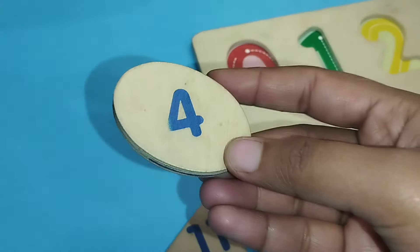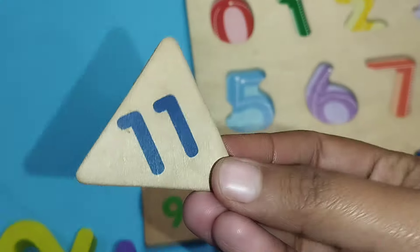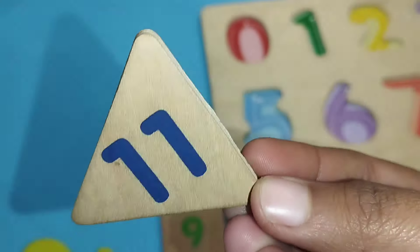The next one is oval. This is oval shape. Triangle. This is triangle shape.